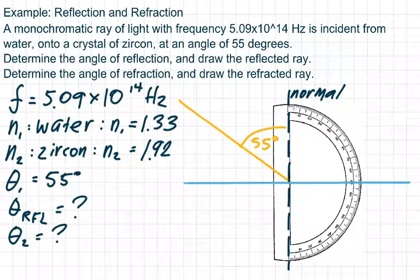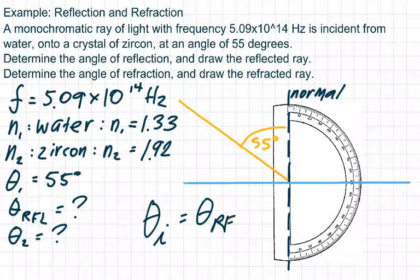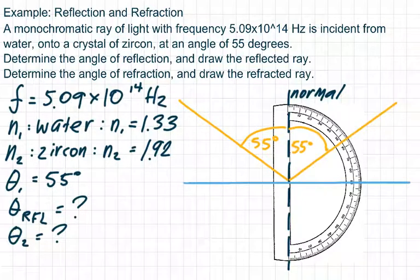Now I know that the way reflection works, the angle of incidence equals the angle of reflection. Theta incident equals theta reflection. I don't like saying r because both reflection and refraction start with r, so sometimes I'll just say rfl for reflection. So there's my reflected ray, 55 degrees. This would be the incoming incident ray, and there's my reflected ray.